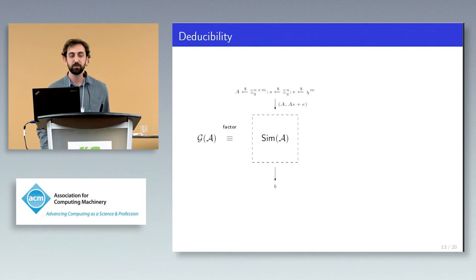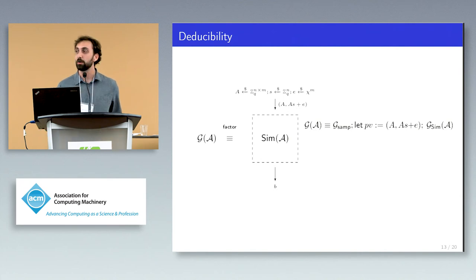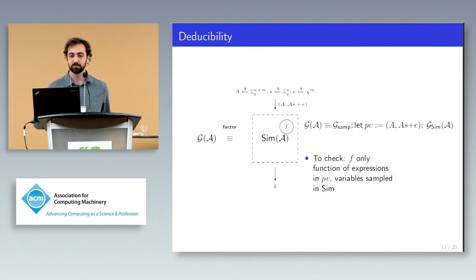Now, the question remains is how can we do this factoring? We need to rewrite the security game G into the following form. First, we run the program G which will sample the inputs to the simulator. This program is actually determined for us by the hardness assumption. Then we create a let-binding PV standing for public variables which defines the input to the simulator. Then we have the code G sim for the simulator. For the simulator to be well formed, it cannot access the variables in G sim directly but only through this expression PV. Thus, we check that every expression inside of G sim can be written only in terms of PV and any variables it generates itself.